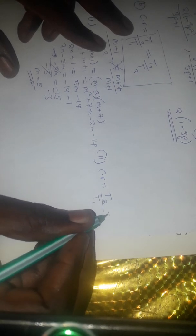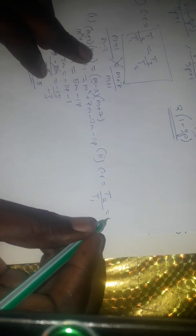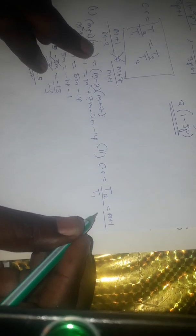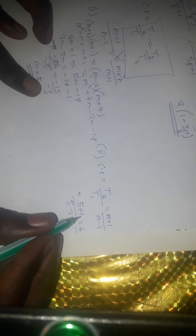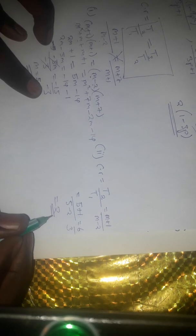Part 2 is asking us to find the common ratio. The common ratio is simply the second term divided by the first term. Our second term is m plus 1 and our first term is m minus 2. We substitute m equals 5: this comes to 5 plus 1 over 5 minus 2, which simplifies to 6 over 3, giving us 2. So the common ratio is 2.